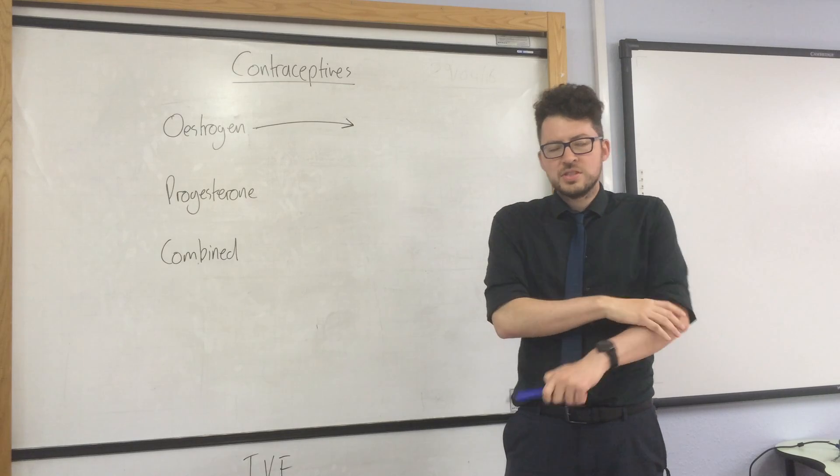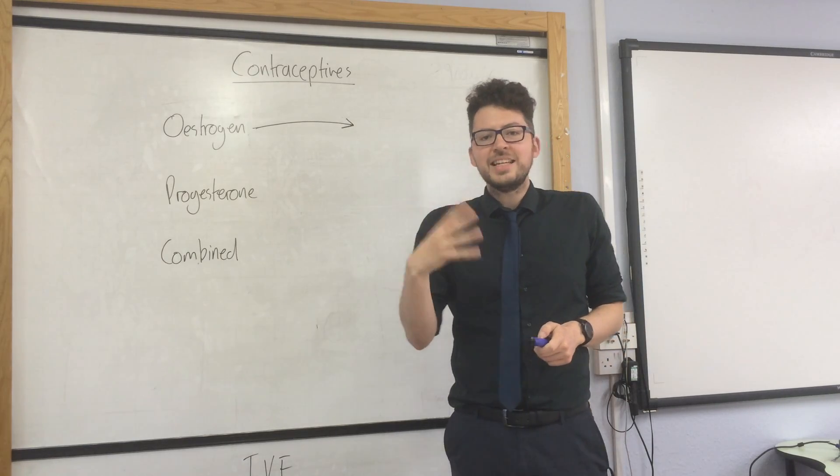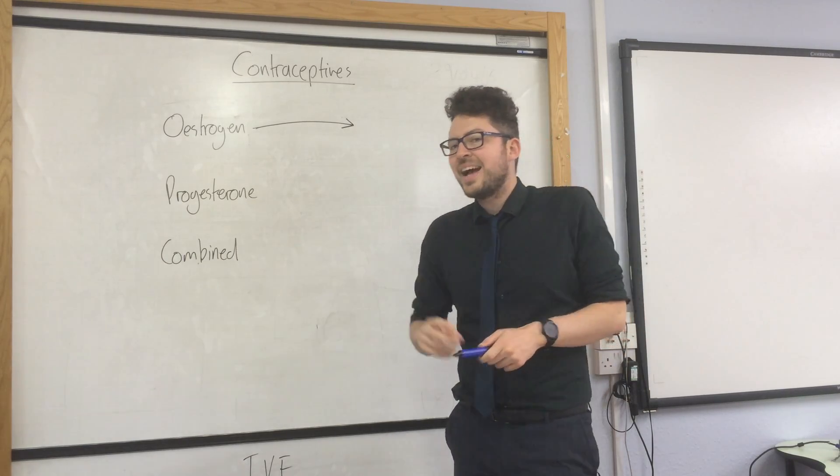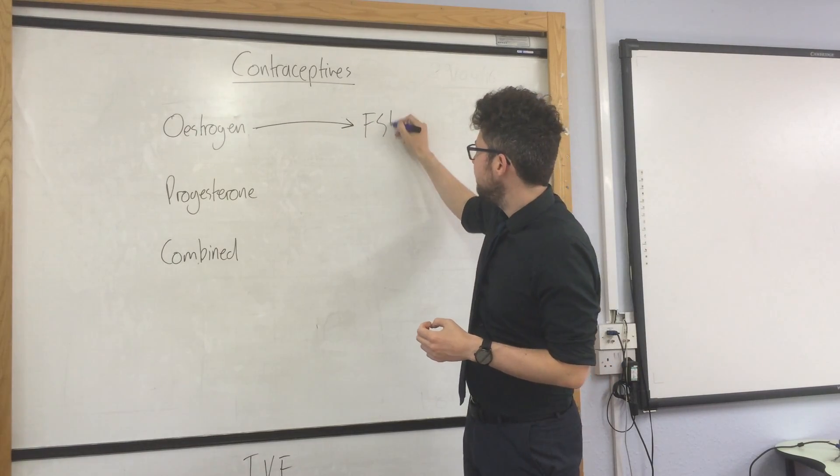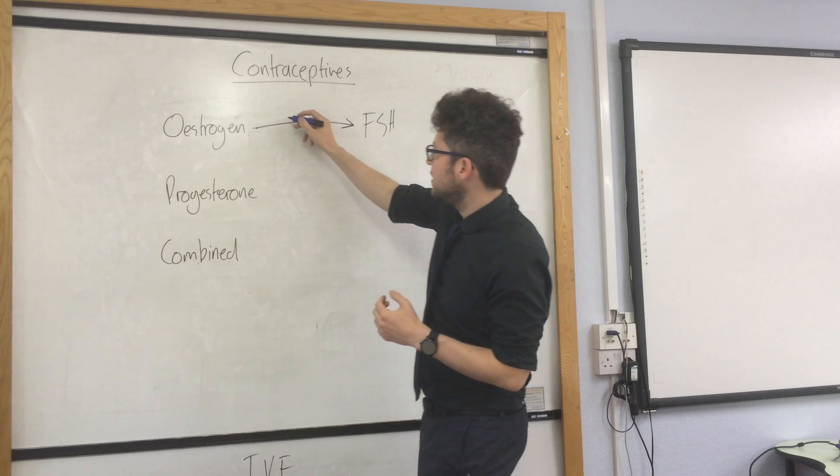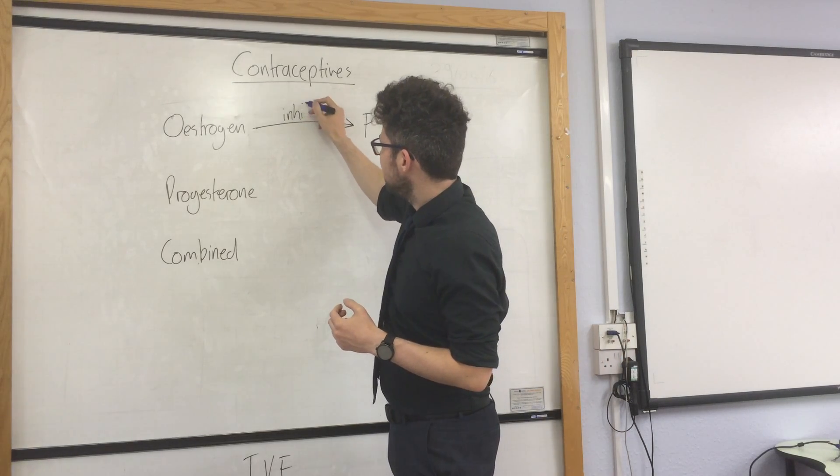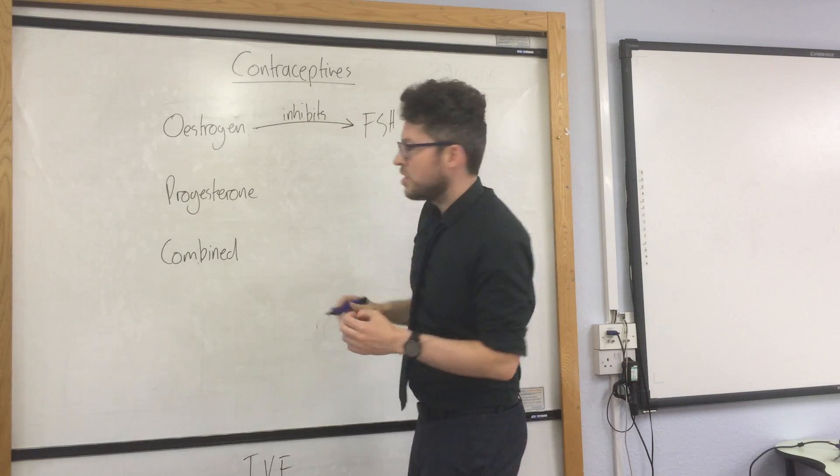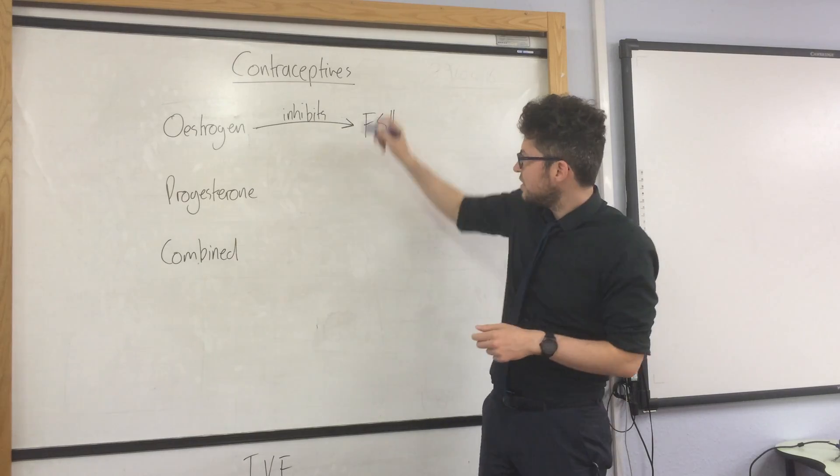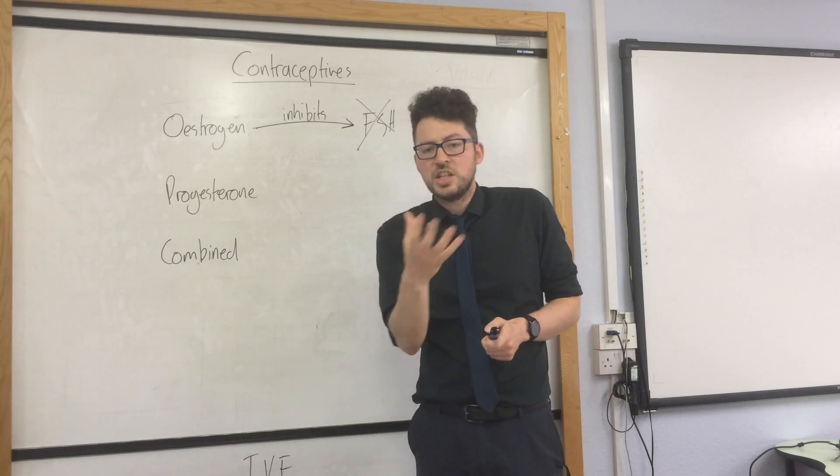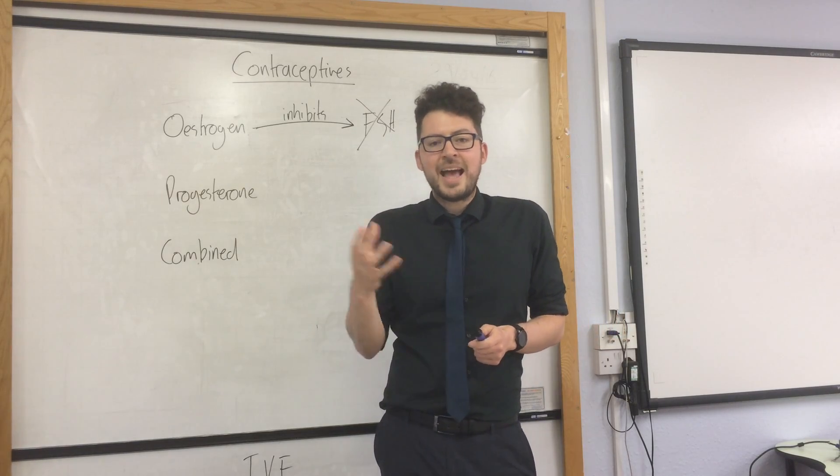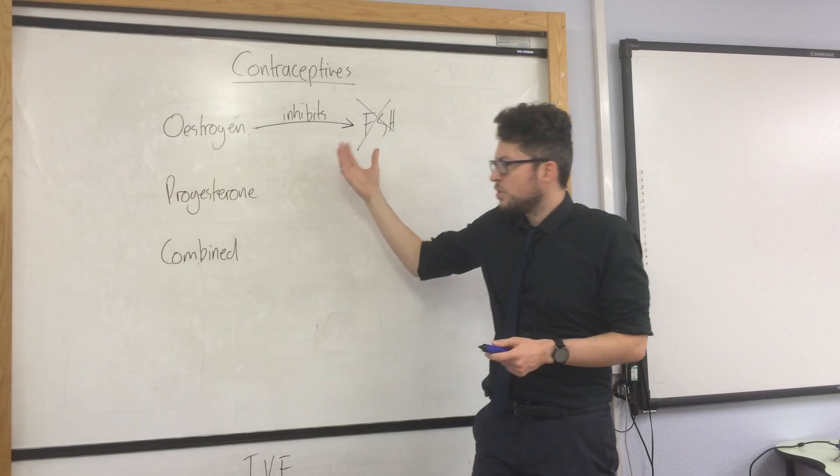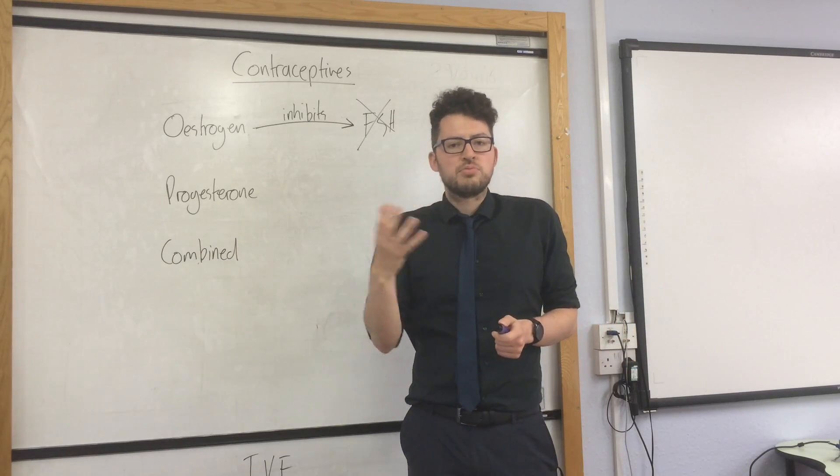The oestrogen contraceptive pill provides oestrogen into the woman and blocks the production of FSH. We say that oestrogen inhibits FSH. That means FSH isn't produced, and the role of FSH is to stimulate the eggs to mature. If the eggs aren't matured, the woman can't become pregnant.